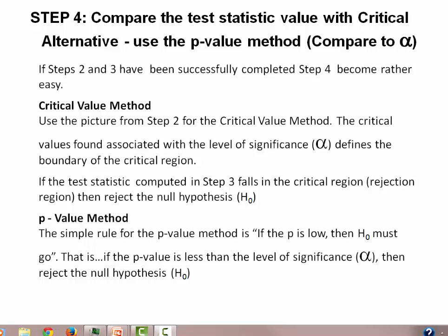A simple statement to relate this information is: if the p is low — meaning the p-value — then H0 — meaning the null hypothesis — must go. So if the p-value is low, H0 must go. That means if the p-value is less than the level of significance alpha, then we're going to reject the null hypothesis.